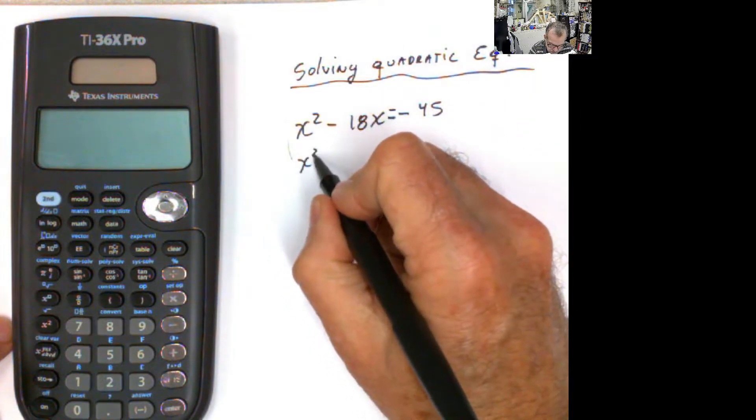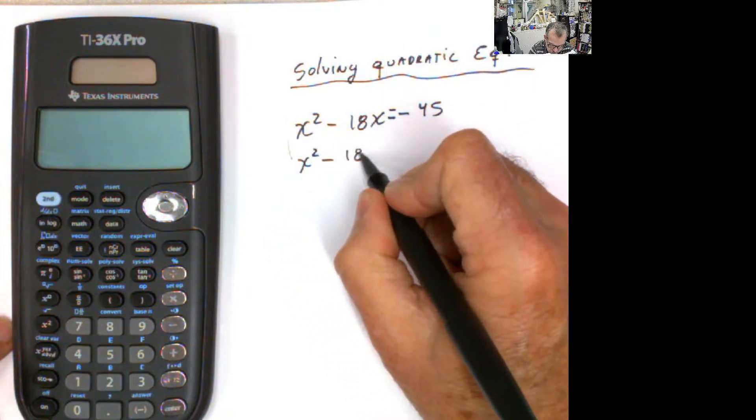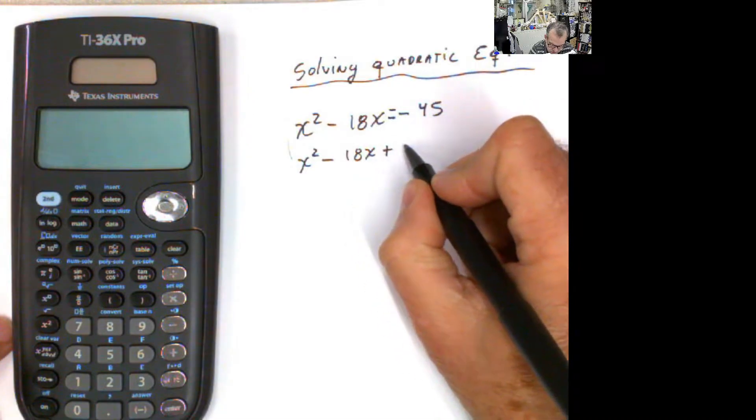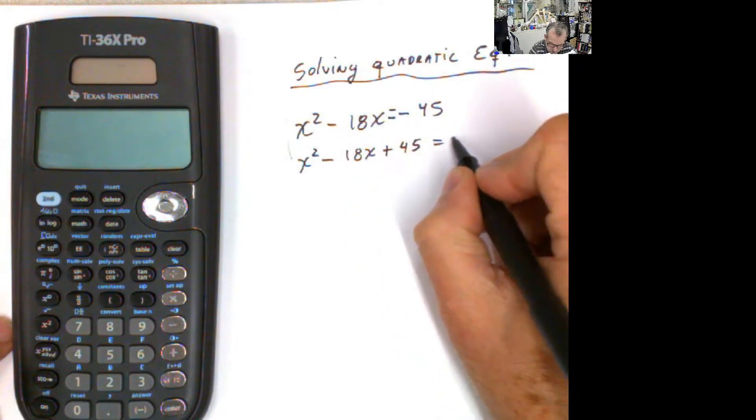The first thing you have to do is put the equation in this form. This negative 45, pass it to the left side as positive equals zero.